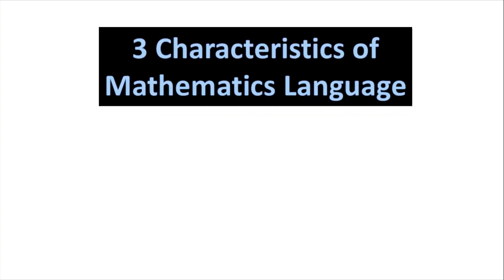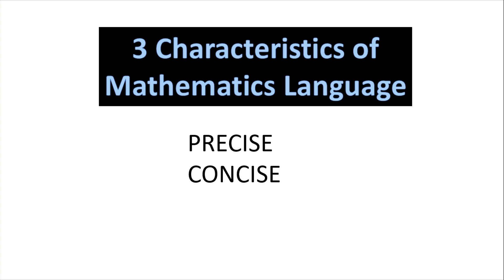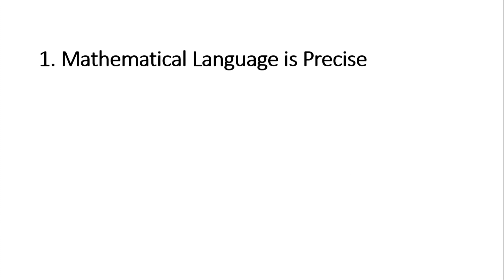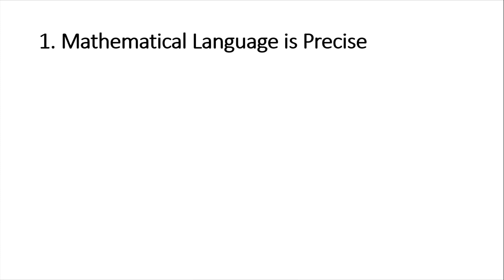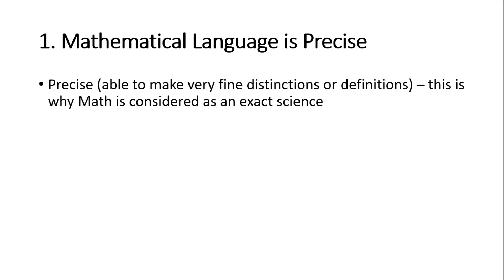We have three characteristics of mathematical language. The first one is it is precise, the second is it is concise, and the third is it is powerful. Mathematical language is precise because it is able to make very fine distinctions or definitions. This is why mathematics is considered an exact science.